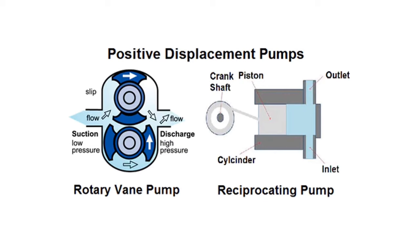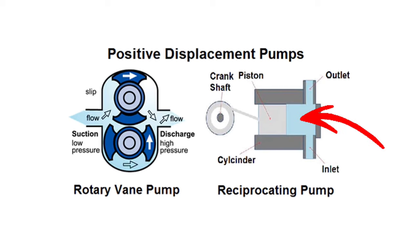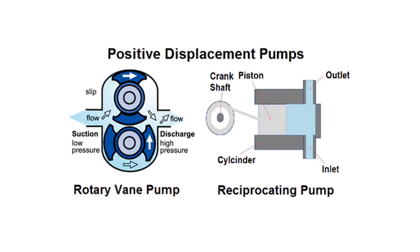Now let's shift our focus to positive displacement pumps. These come in two types: reciprocating — such as piston or diaphragm — and rotary — such as gear, vane, or screw pumps. Their key characteristic is displacing a fixed volume of fluid with each precise cycle, finding applications in oil and gas and food processing.